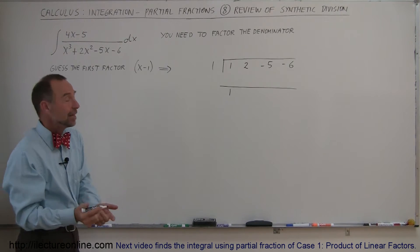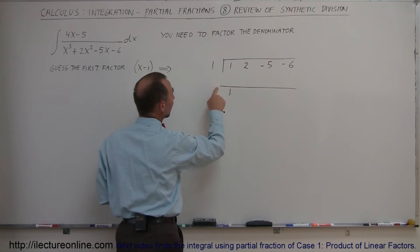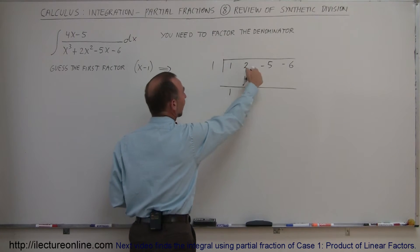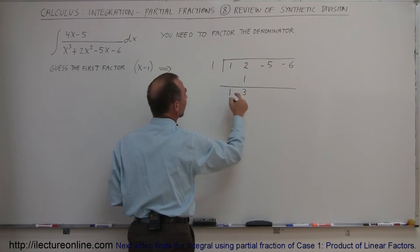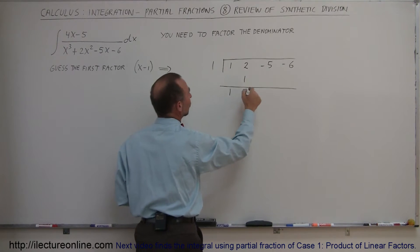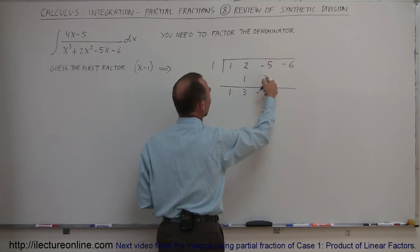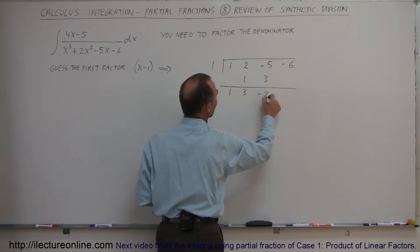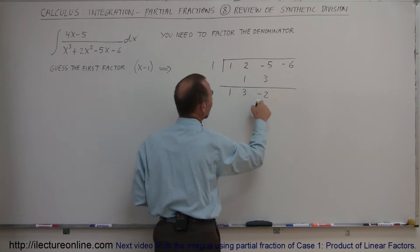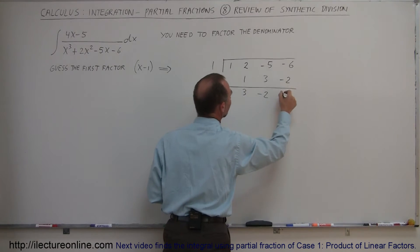Next steps are fairly easy. You multiply this one times this one and put that product over here, and then you add those together, which gives you 3. You multiply this times this, which gives you 3, and you add those together, and you get a negative 2. Then you multiply this times this, you get a negative 2, add them together, you get negative 8.